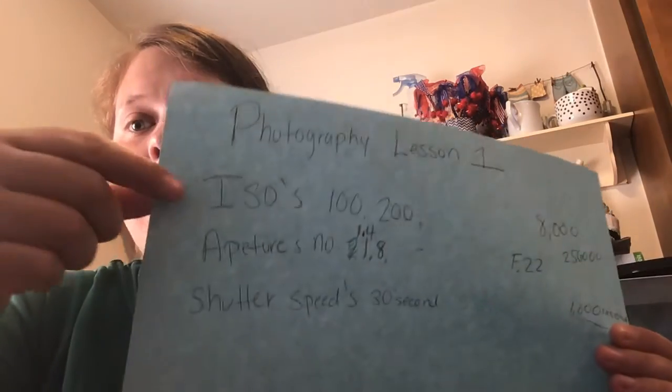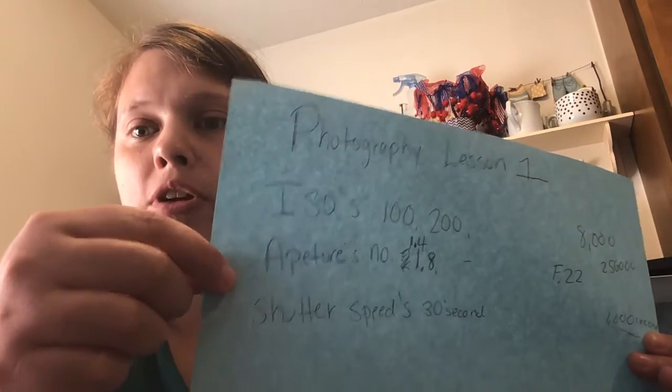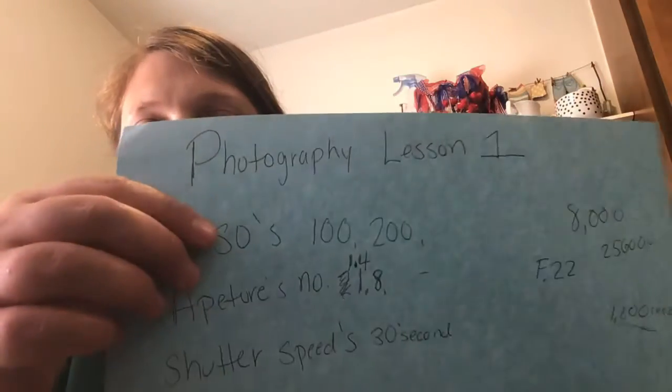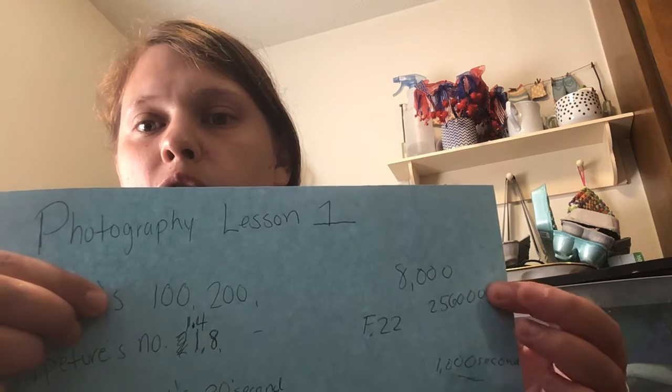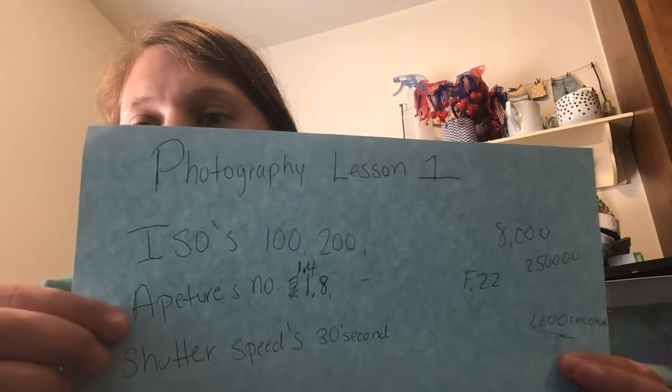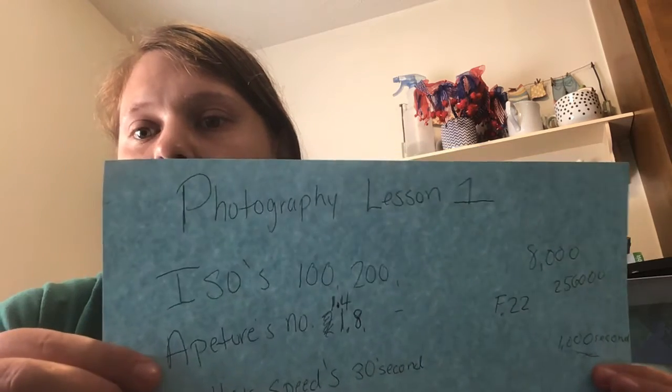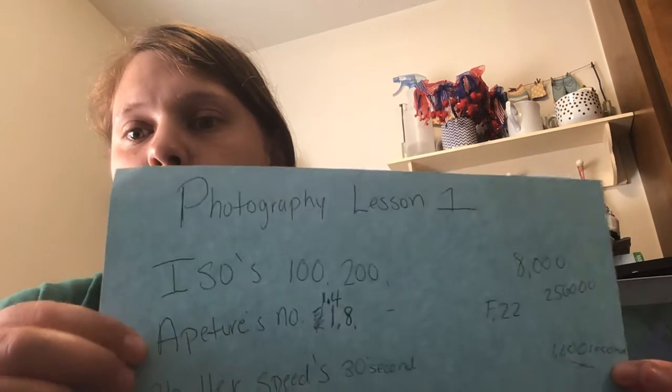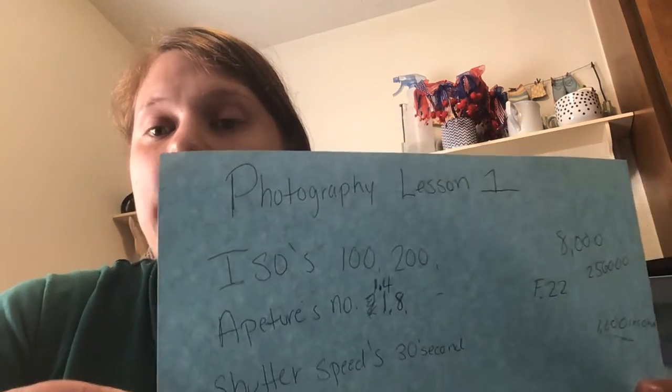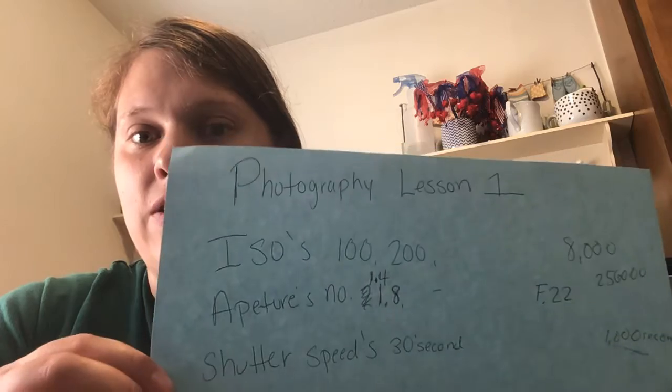In your camera settings you have what's called the ISO, aperture number, and shutter speed number. The ISO numbers range from 100 to over 8,000. Your aperture numbers range from f/1.4 to f/22, and your shutter speed ranges from a 15th of a second to over a thousand of a second — it can even be less than a 15th of a second.